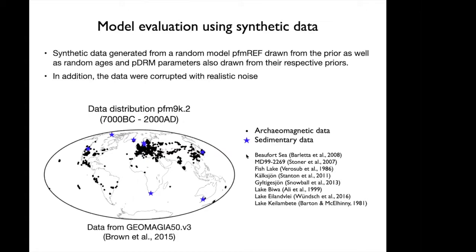To evaluate the model, we use synthetic data generated from the prior. We take a random model — PFM ref — drawn from the prior distribution, draw random ages for the archaeomagnetic data and sediments from their prior distributions, and draw random lock-in parameters. We use our forward model to calculate inclination, declination, and intensity for real data locations, then add realistic noise, and try to recover the true parameters. We are using all archaeomagnetic data in GeoMagia and eight sediment records at the moment.